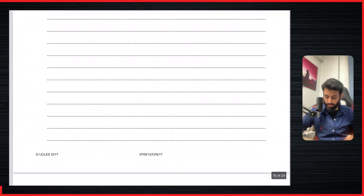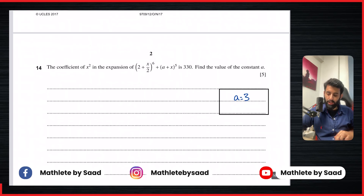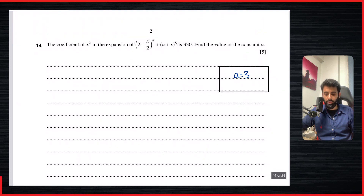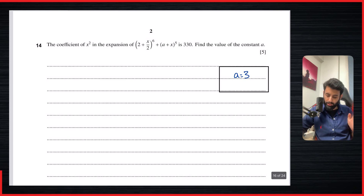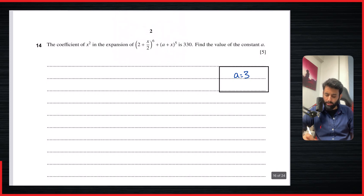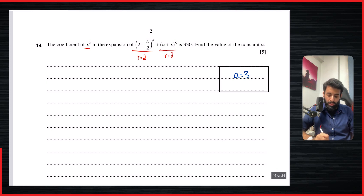One more question — from May 2018, Paper 12. The coefficient of x² in the expansion of (2 + x/2)^6 + (a + x)^5 is 330. Find the value of the constant a. The coefficient of x² in each expansion can be found using r = 2, since x is in the second term of each. We then set their sum equal to 330.